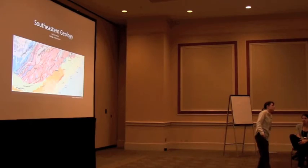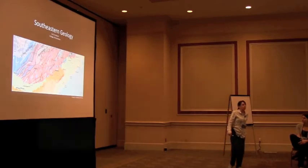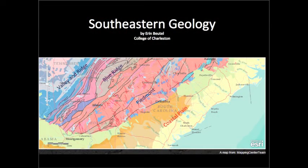So I'm Erin Butel. I'm from the College of Charleston, in case you missed in the massive introductions. I'm going to be talking about southeastern geology. So just to kind of give us an orientation, we're looking at a geologic map of North Carolina, South Carolina, Georgia. The words that should be familiar with coastal plain, Piedmont, Blue Ridge, Valley and Ridge, those are the geologic terms.